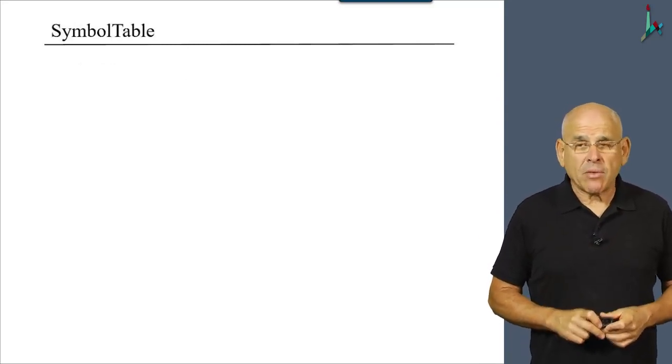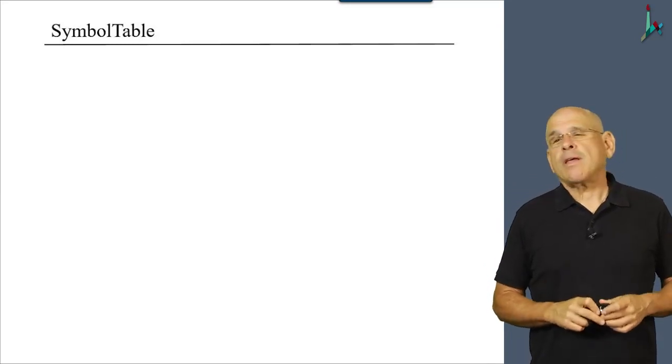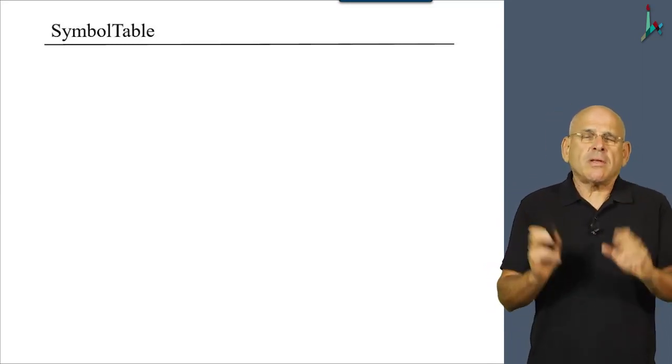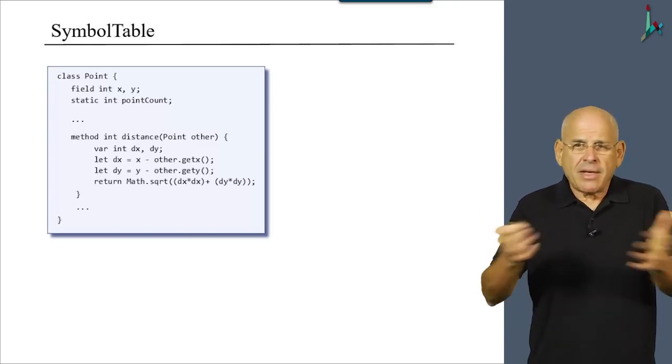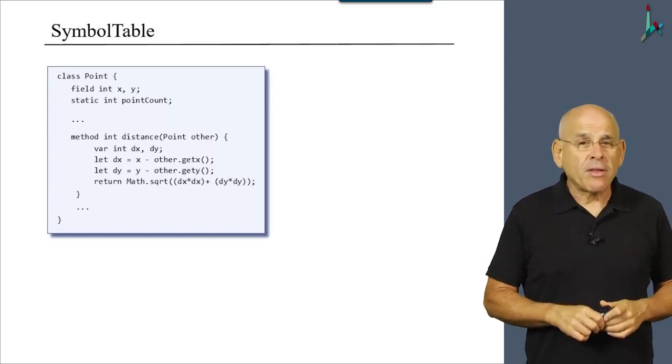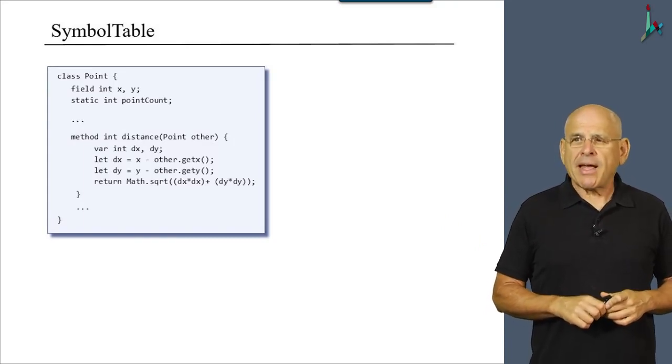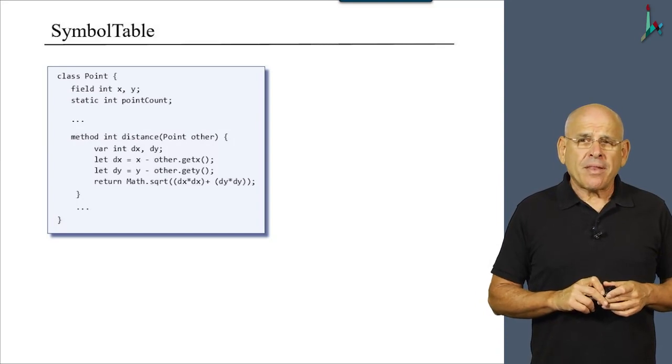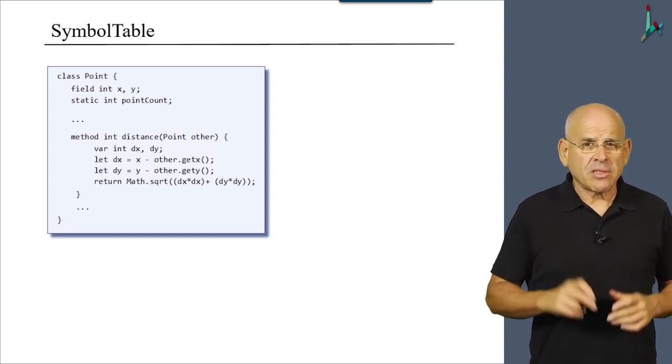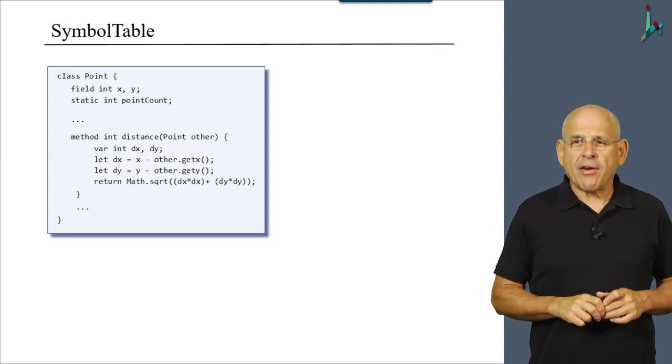What about symbol table? Well, symbol table is new. And because it's new, let me start with some background. So here's an arbitrary example, the point class that we used several times in this course. And we see that there are several kinds of symbols or variables lurking here.